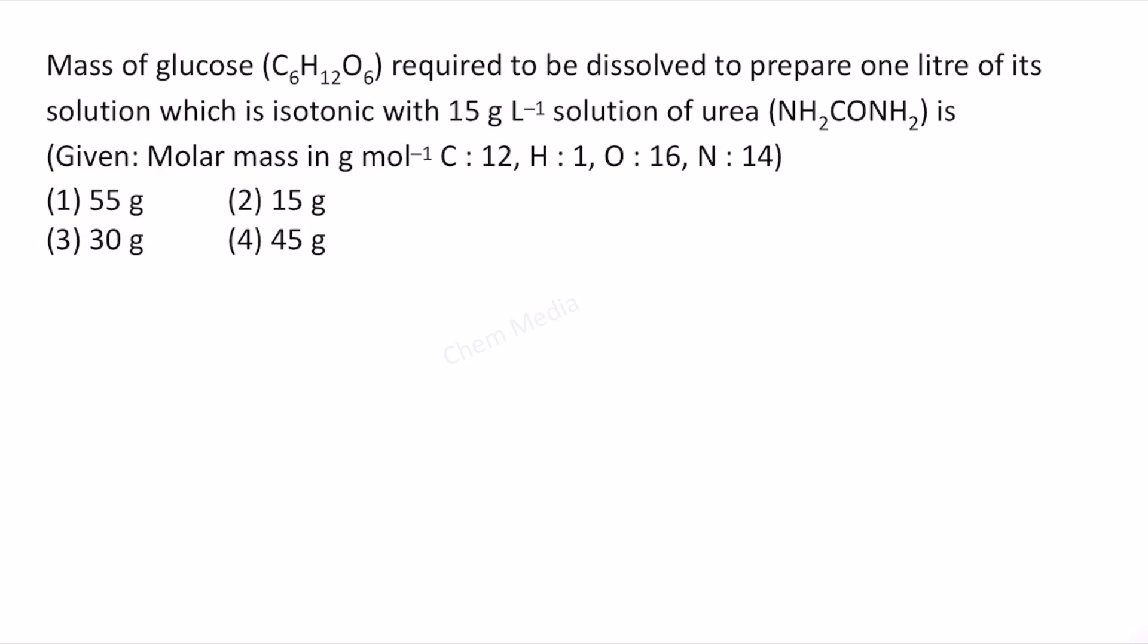First of all, what is isotonic solutions? Two solutions are considered to be isotonic if their osmotic pressures are equal. This means that in this case the osmotic pressure of glucose is equal to the osmotic pressure of urea.